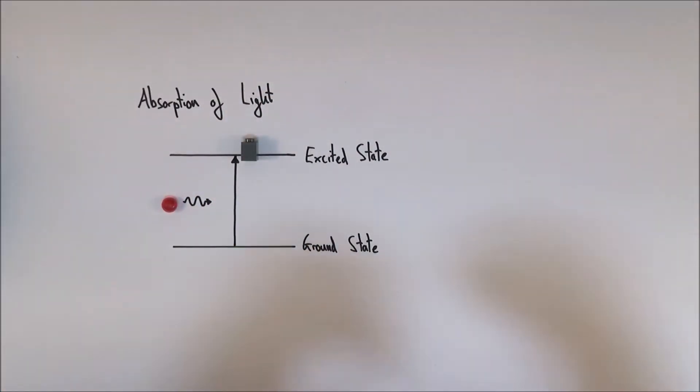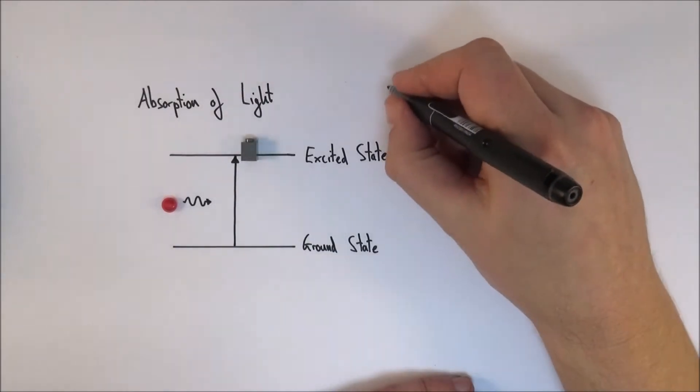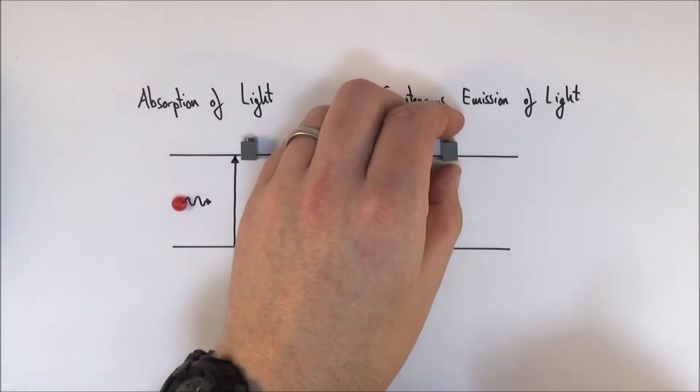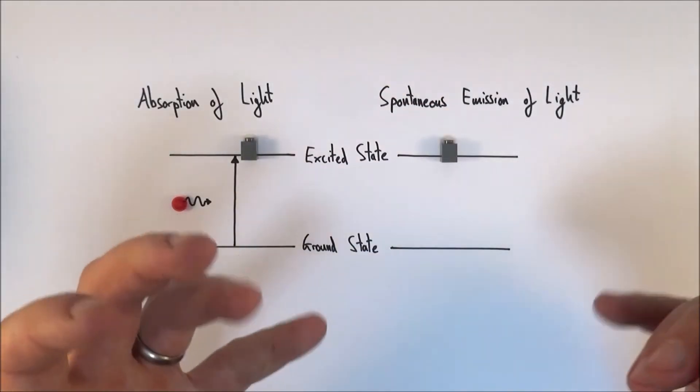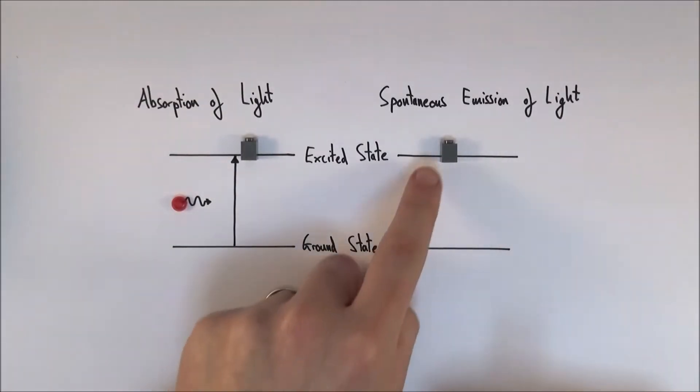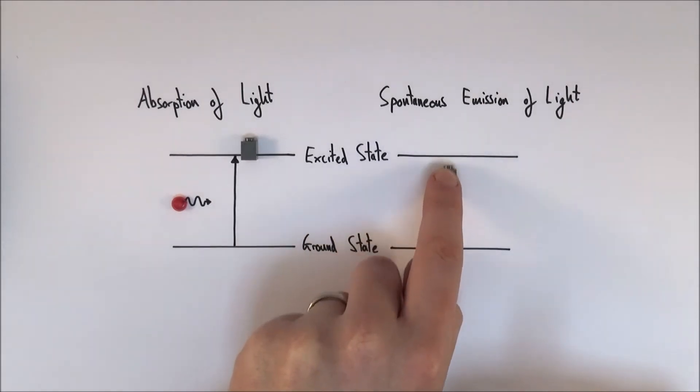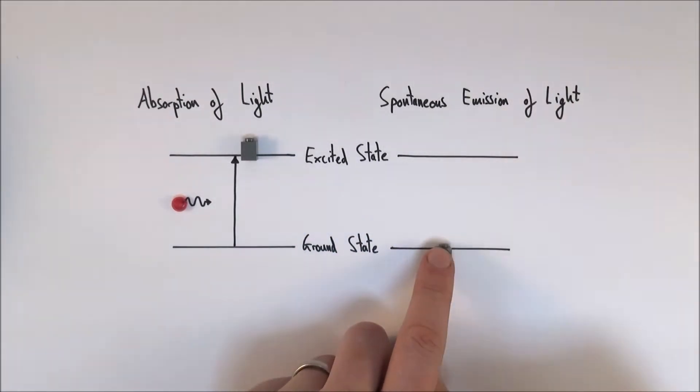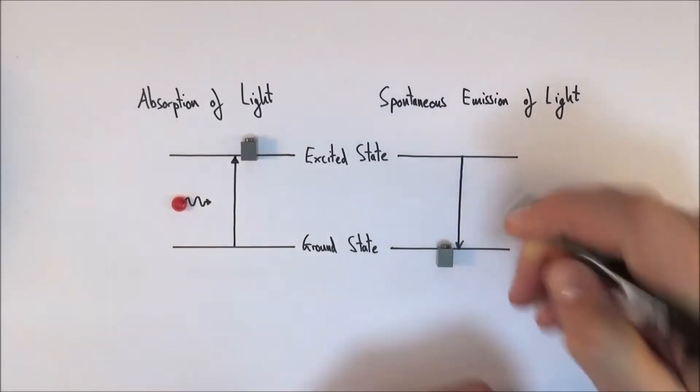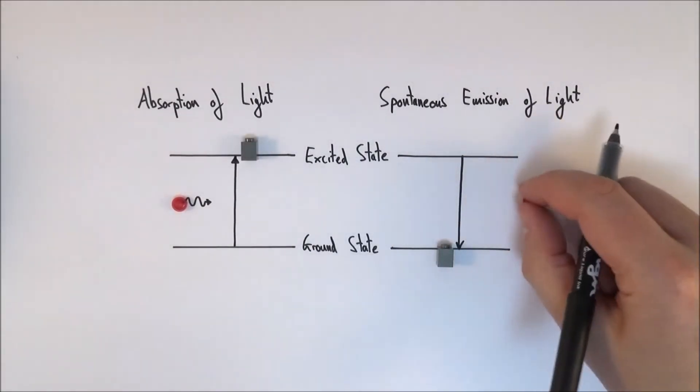But the other thing can happen. We can also get what we call the spontaneous emission of light. This is very much when the opposite happens. You have an atom which is excited perhaps, for whatever reason. Maybe it's absorbed a photon before, maybe there's some electricity or something like that. And what happens is the electron drops from the higher level down to the lower level, from the excited down to the ground state. And as it drops down this level, it then emits a photon of light.